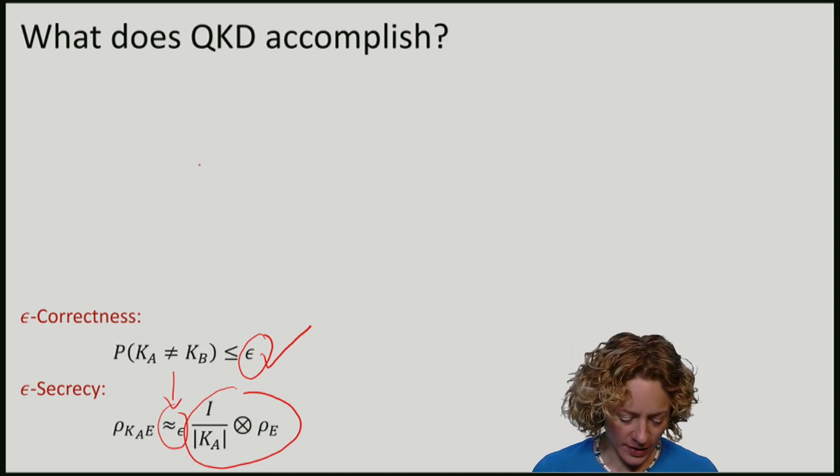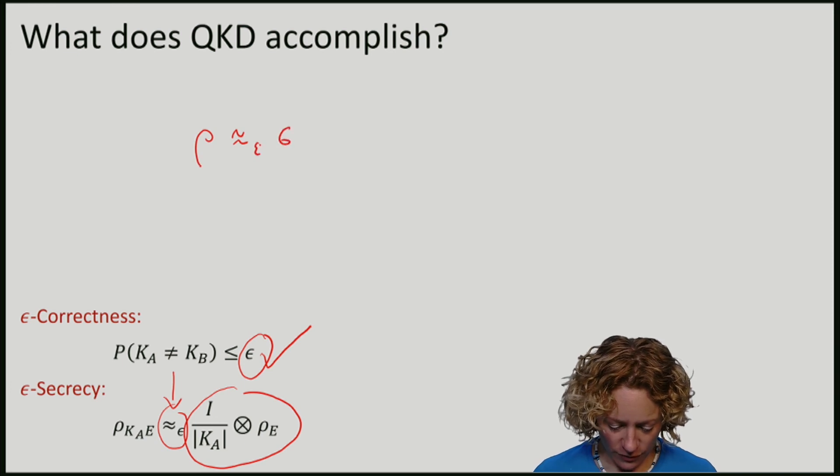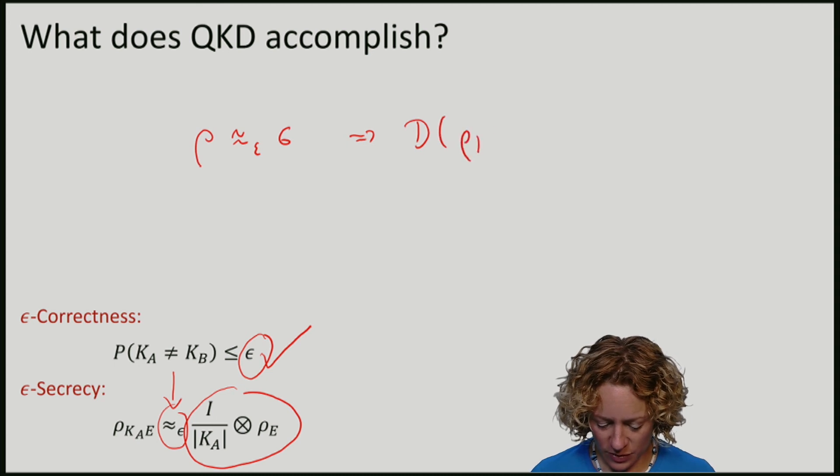It means that the state they produce, if rho is epsilon close to sigma, the trace distance between rho and sigma is small.